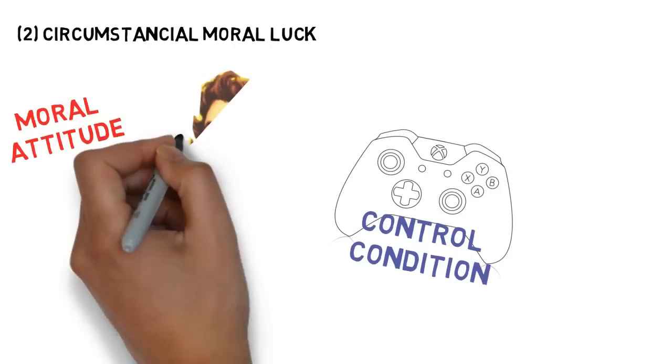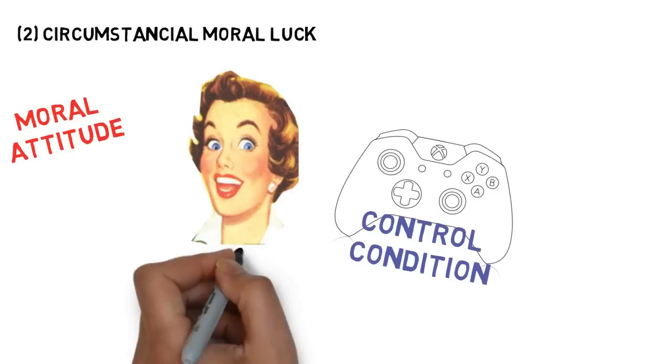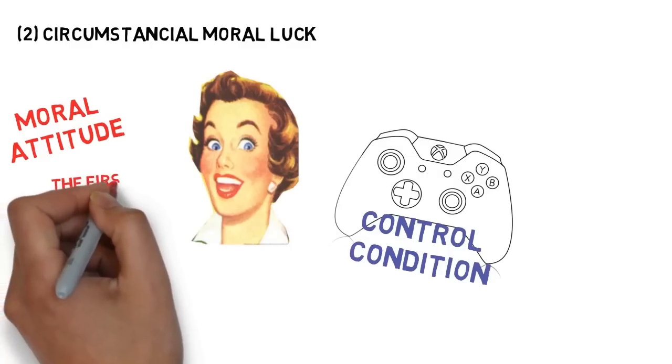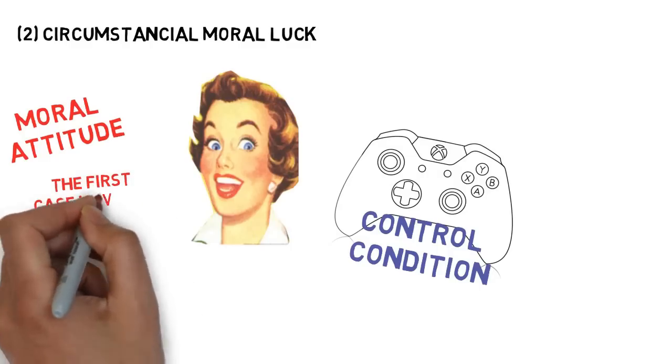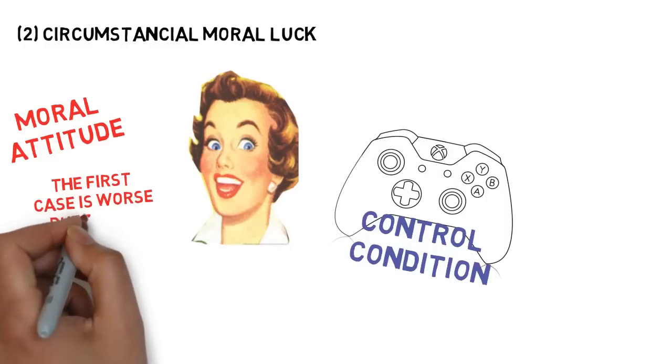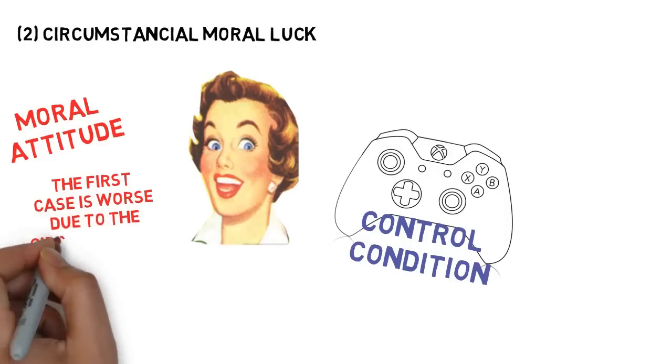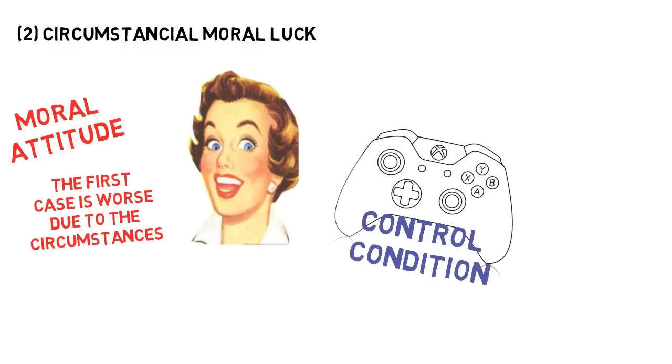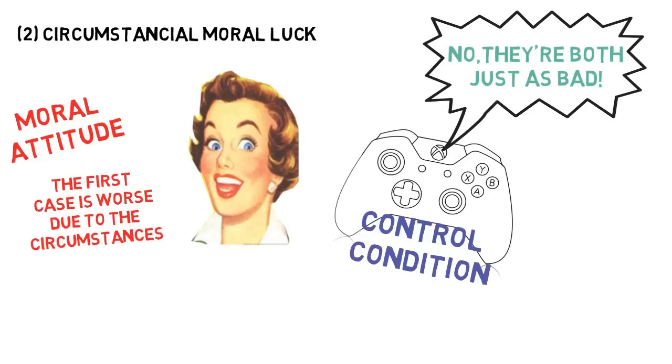Secondly, when the control condition conflicts with our attitudes due to circumstances, such as when a civil servant who, for reasons beyond her control, works for a regime that commits genocide is judged more harshly than one who works for a regime that does not, even if it's likely that they would have both done the same thing in each other's place. Whereas again, if we held to the control condition, the degree of condemnation should be equal.